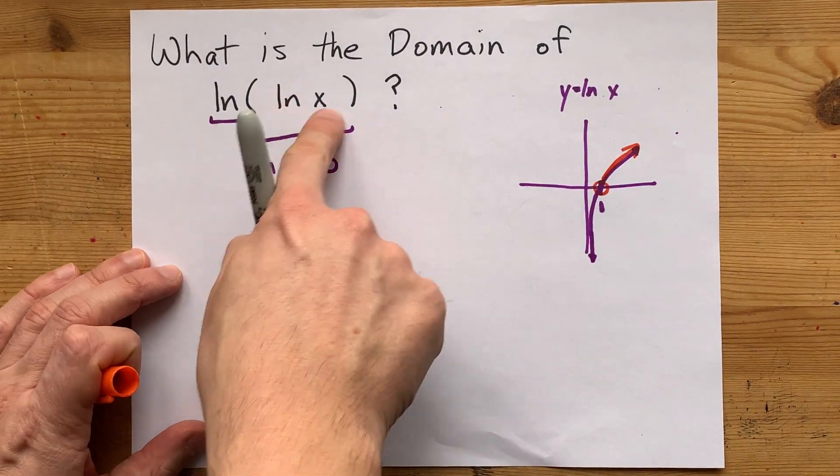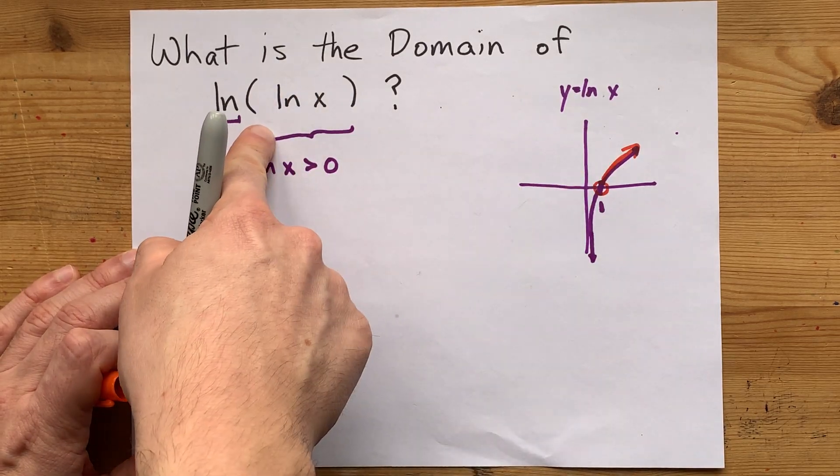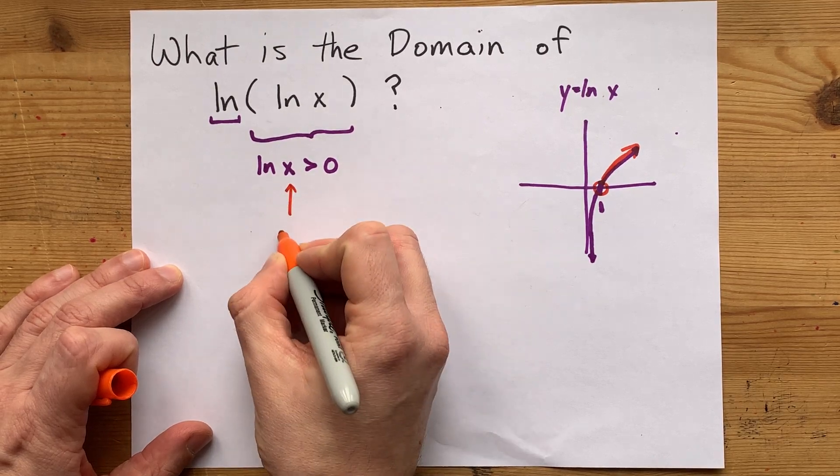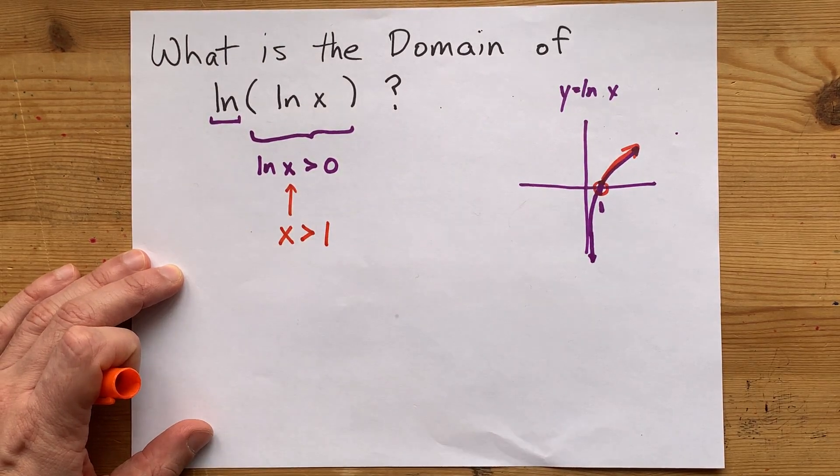You need the output of ln x, or the y value, to be bigger than 0, and for that, you require this x to be greater than 1.